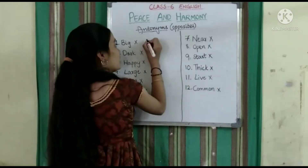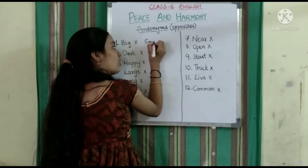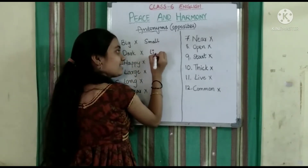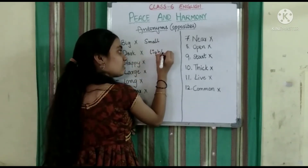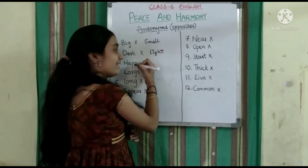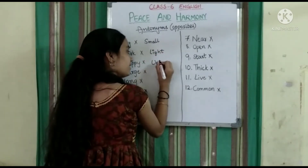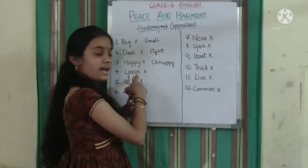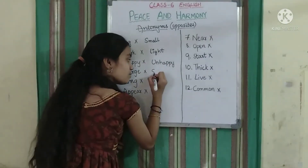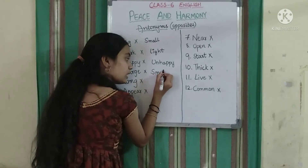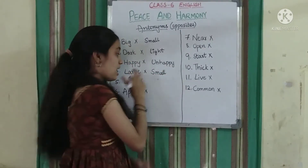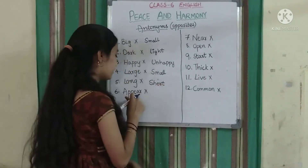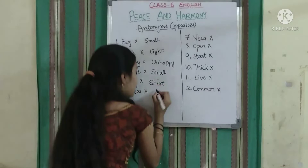Big, small. Dark, light. Happy. Large, small. Long, short. Appear, disappear.